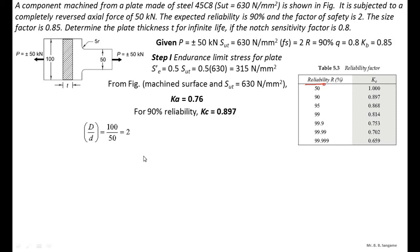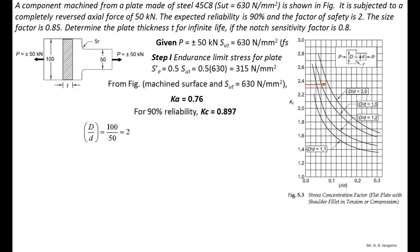Now let us calculate the D/d ratio. Capital D is 100 and small d is 50 — D is the maximum width of the plate and d is the width of the smallest part, giving a ratio of 2. There is a fillet radius provided on the surface; the fillet radius r is 5, so r/d = 5/50 = 0.1. We refer to the stress concentration factor chart for a flat plate with a shoulder.